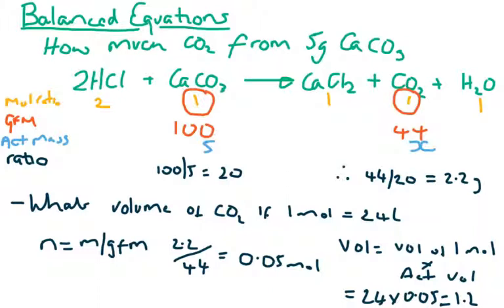Calculations from balanced equations. The best way of laying these out is as below. We need to find out the amount of carbon dioxide being made from 5 grams of calcium carbonate. The balanced equation will be given. These work on the ratios between the moles of each of the material that we are interested in. First off, put in the mole ratios. Indicate which ones we are interested in. In this case, the calcium carbonate and the carbon dioxide. Work out the gram formula mass for each. For calcium carbonate that works out as 100. For carbon dioxide that works out as 44.